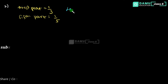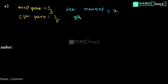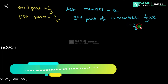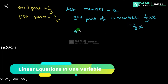Let the number be equal to x — we don't know that number, so we take it as x. Third part of that number will be equal to 1 by 3 into x, that is 1/3 x. Fifth part of a number will be equal to 1 by 5 into x, that is 1/5 x.